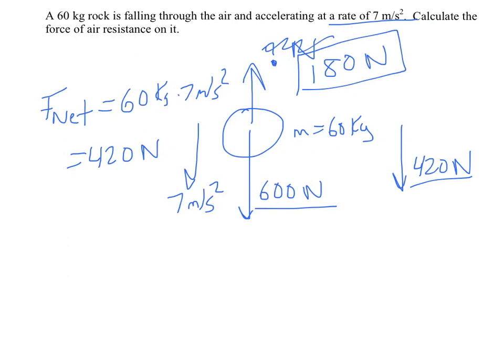So again, just like the last problem, working backwards. The problem should be more clear about which way it's accelerating. Because believe it or not, this object could have been accelerating upward. And you might say, how is that possible? Well, if the objects were slowing down, it could be accelerating upward at 7, in which case the net force would be 420 up.